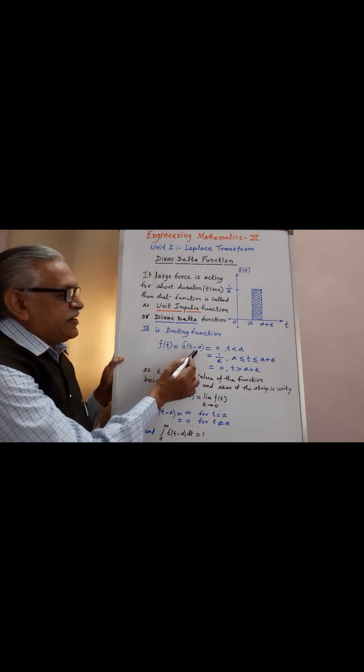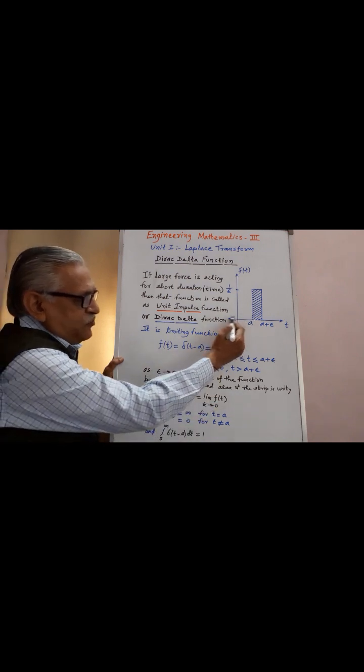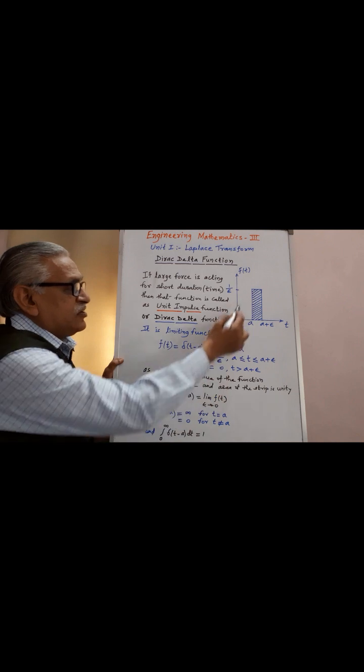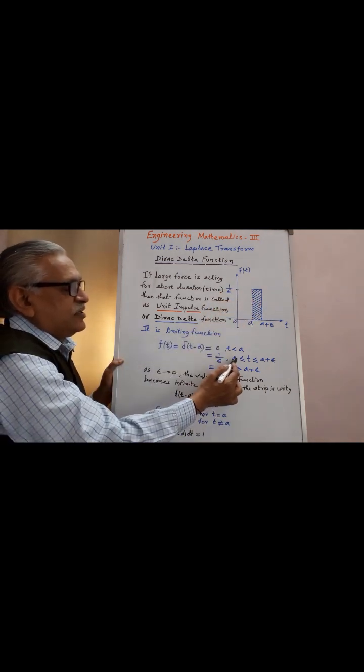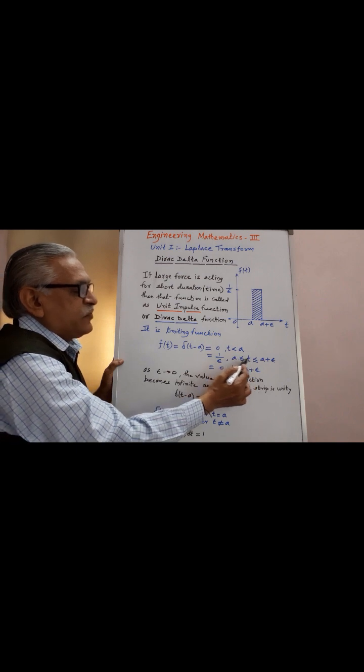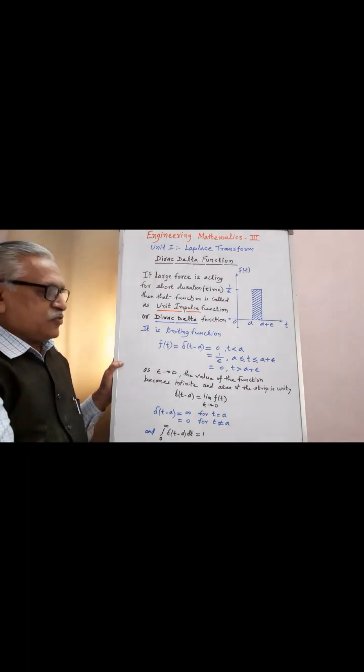Define delta of t minus a having three values: 0 for less than a values, 1 by epsilon. This is 1 by epsilon for the value of t in between a to a plus epsilon, greater than a plus epsilon its value is 0.